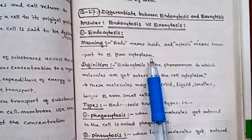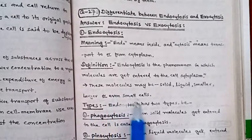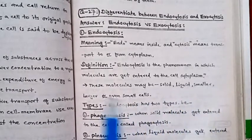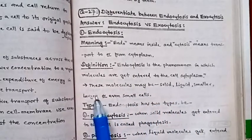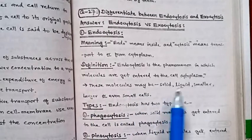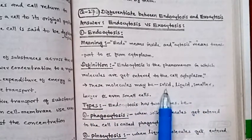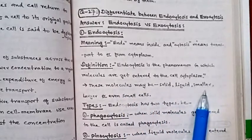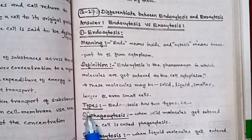Inside means the material is coming inside. Endocytosis definition: endocytosis is the phenomenon in which molecules get into the cells. These molecules may be solid, liquid, smaller, larger, or even small cells.